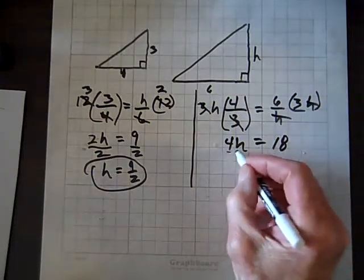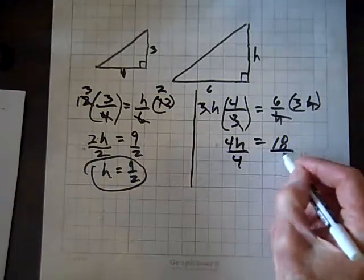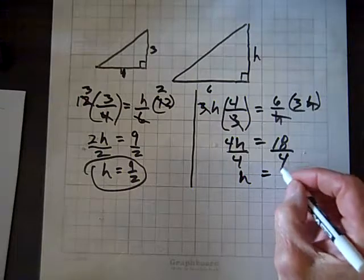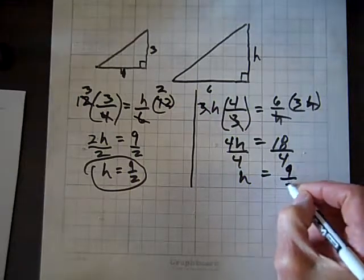Now we'll divide both sides by 4, and we get H equals 18 over 4, which reduces to 9 over 2.